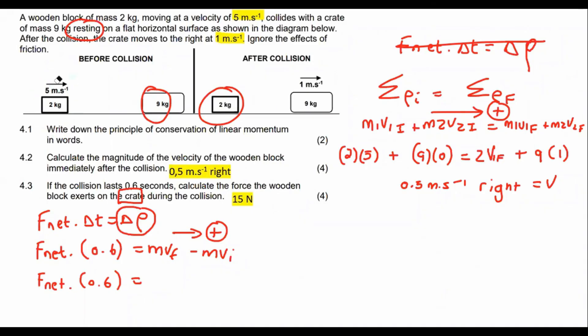Now, which one is the crate and which one is the box? It says a wooden block of mass moving and collides with a crate. Oh, okay. So the crate is the 9 kilogram one.